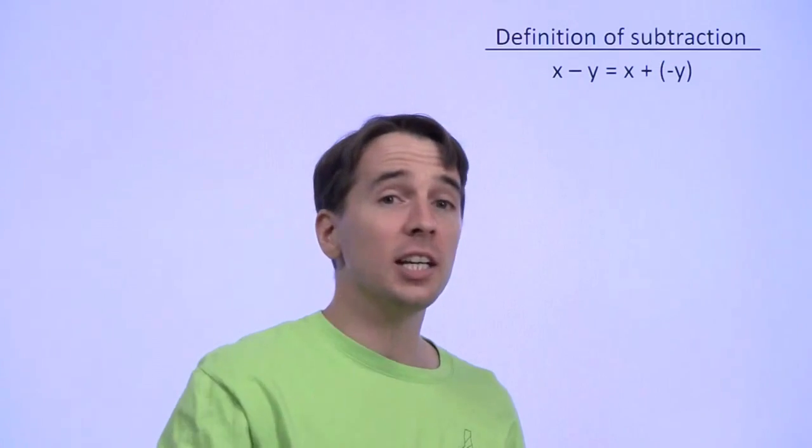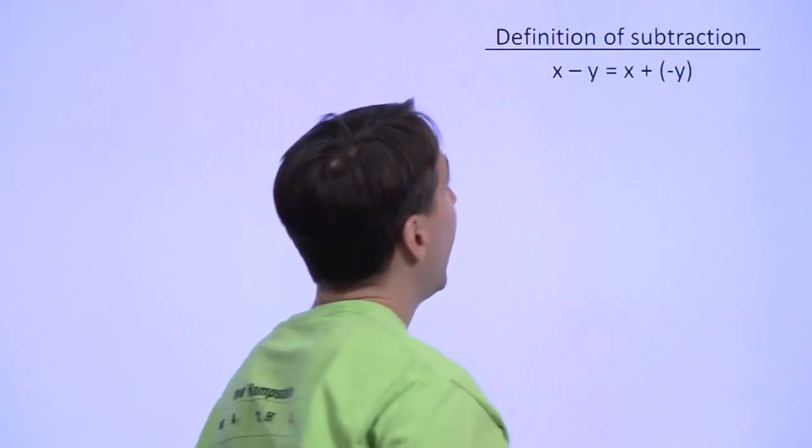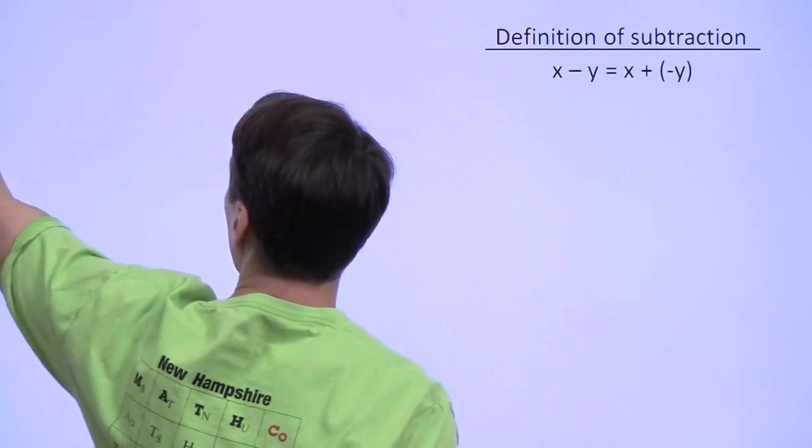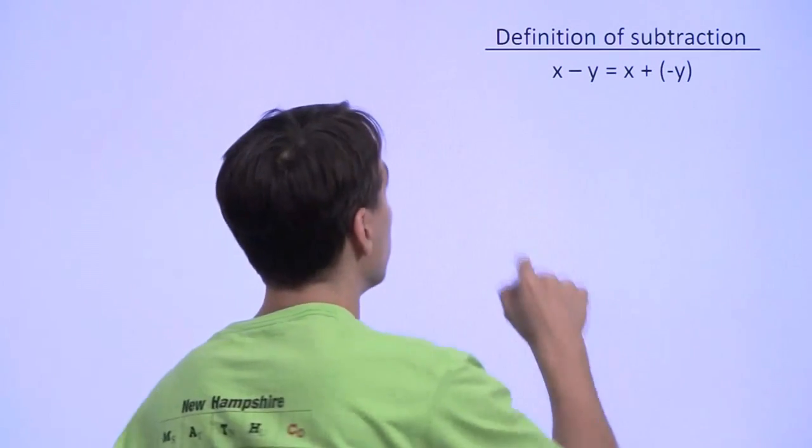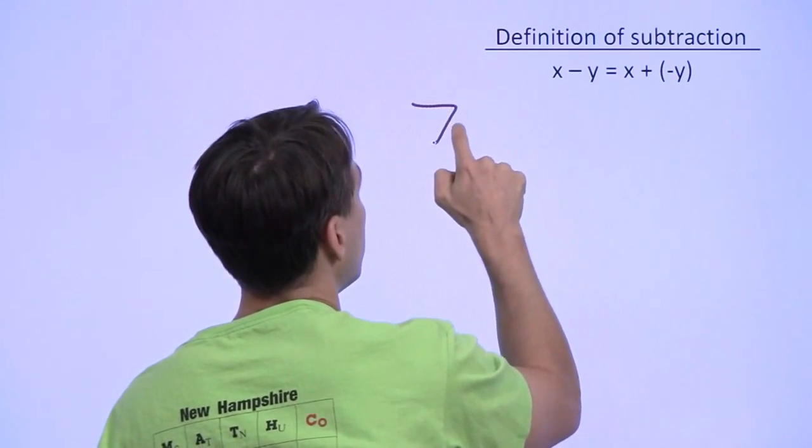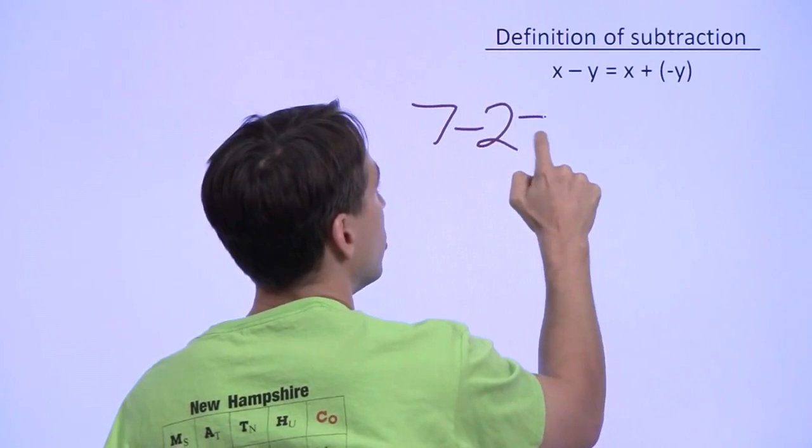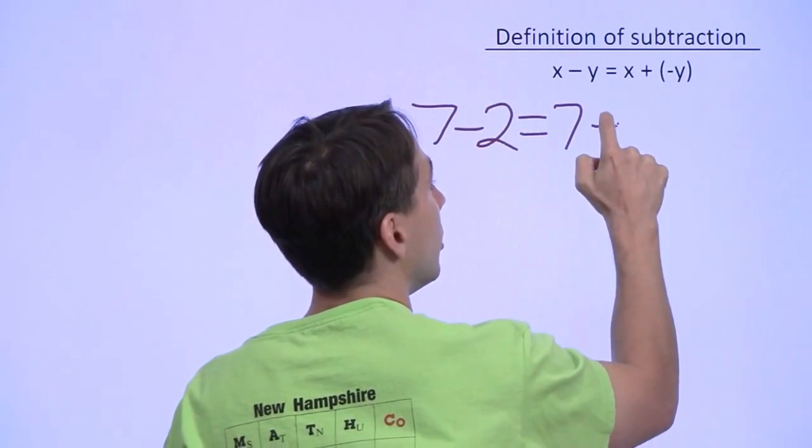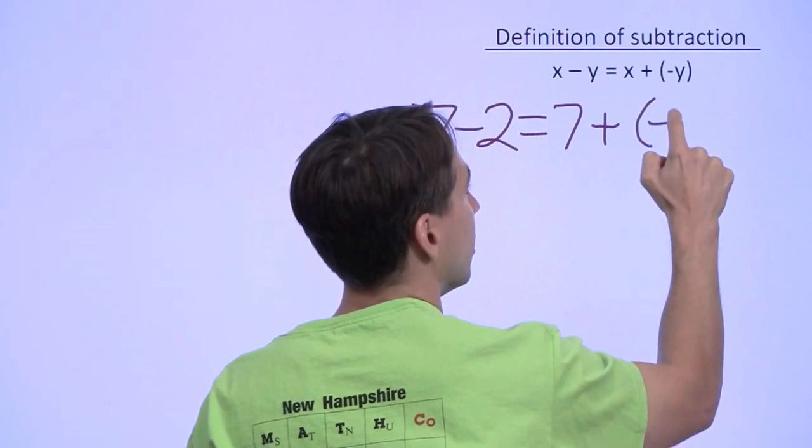That seems kind of vague, so let's take a look at that basic example, 7 minus 2, and see if it comes up with the right answer when we use this definition. We'll start with 7 minus 2, and using our definition, that is 7 plus the negation of 2, which we know is negative 2.